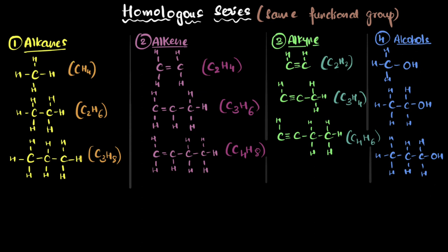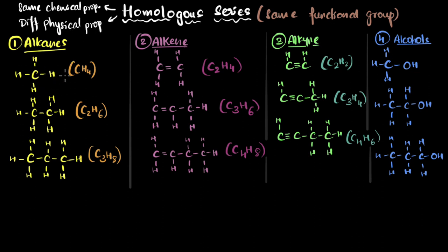Now with that intro, let's explore some of their features. One of the main features is that all members of a homologous series have the same chemical properties but different physical properties. Chemical properties only depend on the functional group. Since they all have the same functional group, they should have the same chemical properties. This means if I understand how one alkene reacts with a particular molecule, I know that all other alkenes will react in a very similar way, giving very similar products.